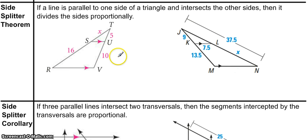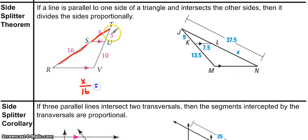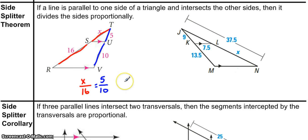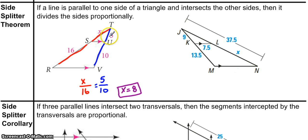Let's see how the side-splitter works in this first practice problem — we need to find variable X from S to T. The side-splitter theorem says I can write a ratio from the smaller part X to 16, and that should be proportional to the corresponding sides on the other side of the triangle: T to U is 5, which matches X, and U to V is 10, which corresponds to 16. Pause the video and solve it. The answer is X equals 8. This could also be solved quickly by noticing that 5 is half of 10, so 8 must be half of 16.